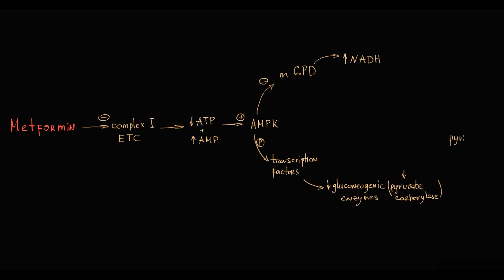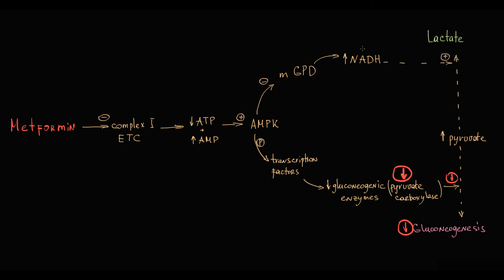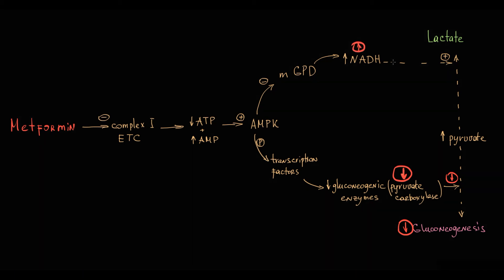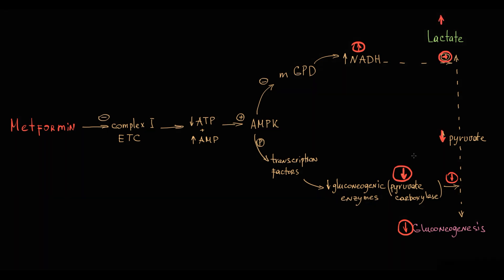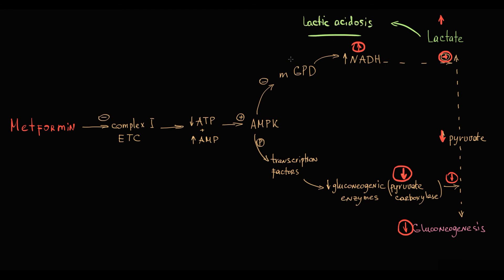When a patient takes metformin, it first inhibits gluconeogenic enzymes such as pyruvate carboxylase, decreasing gluconeogenesis and transiently causing accumulation of pyruvate. Simultaneously, by inhibiting mitochondrial glycerol-3-phosphate dehydrogenase, it increases NADH concentration. As a result, pyruvate is converted to lactate, decreasing pyruvate availability as a gluconeogenesis substrate, and causing significant lactate accumulation that enters the blood, causing lactic acidosis — a signature side effect of metformin. Because lactic acid is cleared by renal excretion, renal dysfunction decreases lactate clearance and aggravates lactic acidosis.